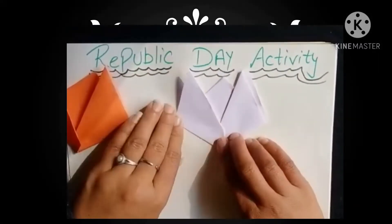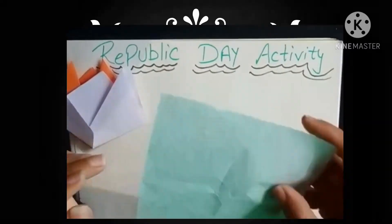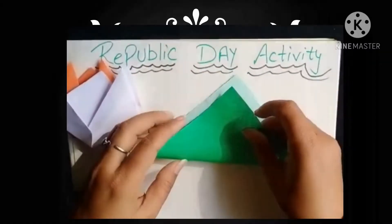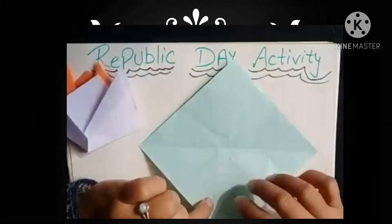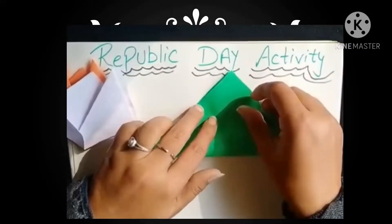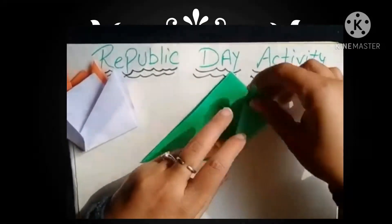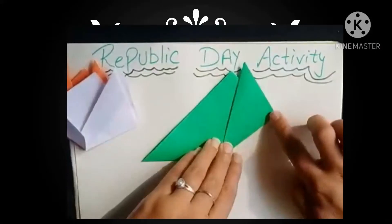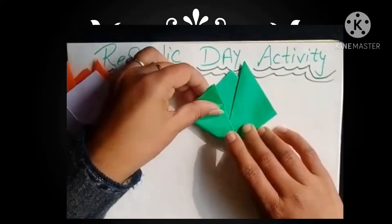Now we will make a green color using the same procedure. We need to turn this corner to this corner. Then we need to keep this corner to this corner. And we need to keep this corner to this corner.